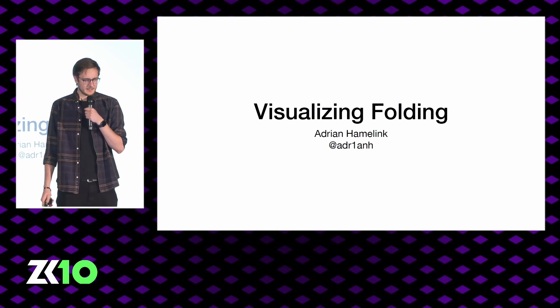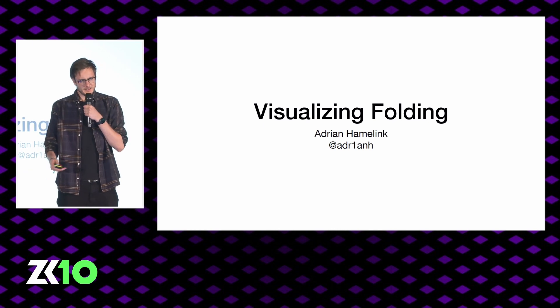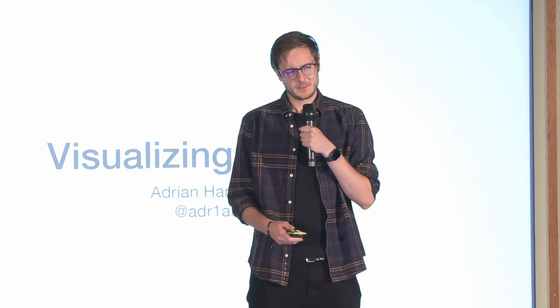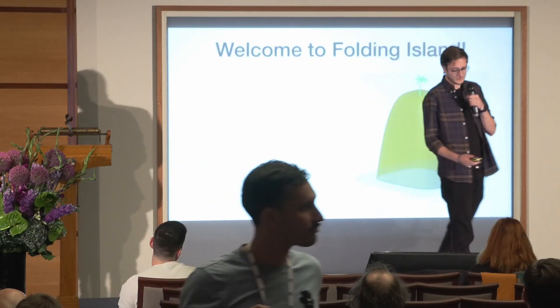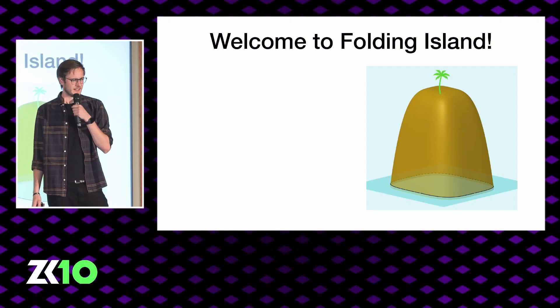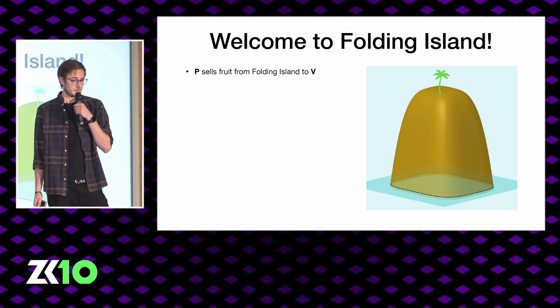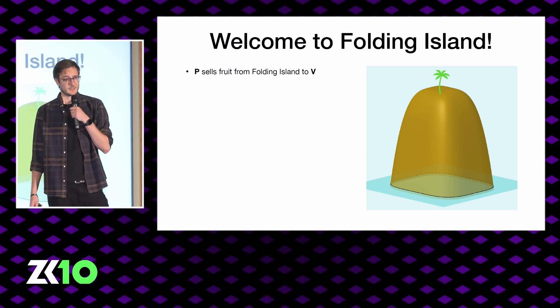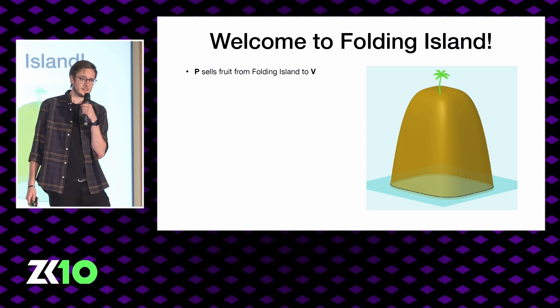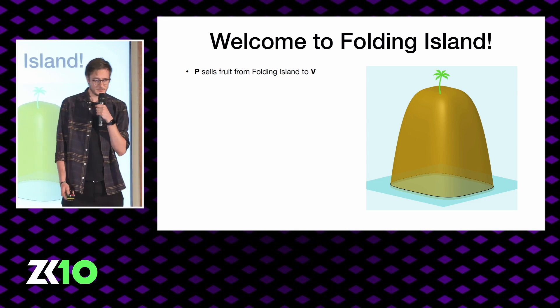Like with any good ZK analogy, we obviously need a very contrived real world example. So if you'll allow, let's take to the sea as we explore Folding Island. There's this very special fruit that grows on the shore. This fruit is rare and because it's on an island, it's not exactly easy to get to. But fortunately we've got a prover who knows how to get there. He picks the fruits, brings them back to mainland, and sells them to a verifier.